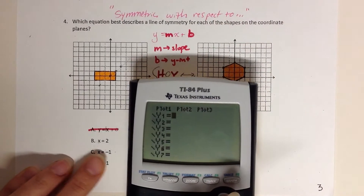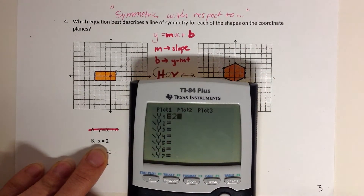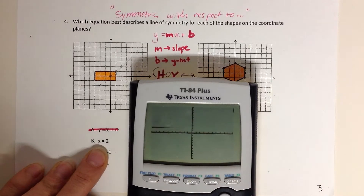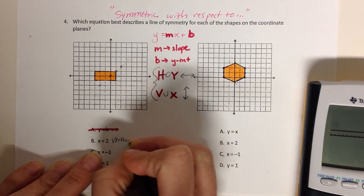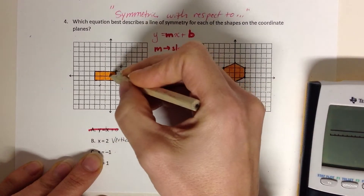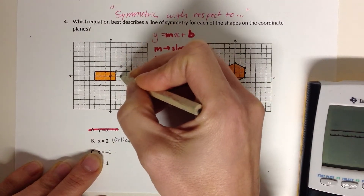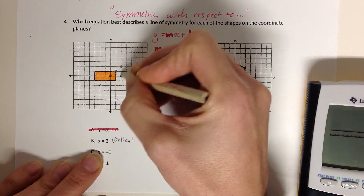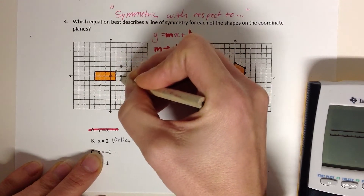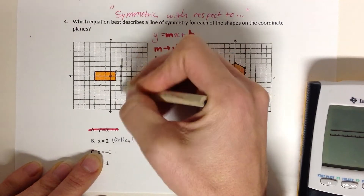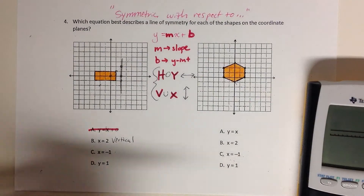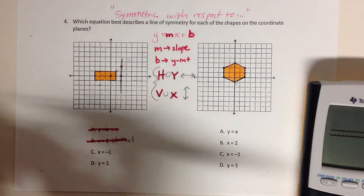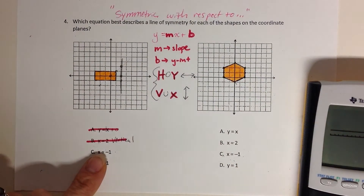I'm going to enter y equals 2 and graph that. What I know right now is that y equals 2 would be a horizontal line, so x equals 2 will be a vertical line. So let's look at the vertical line where x is 2 — for example, here's the point (2,0), here's (2,2), here's (2,-1). Is that a line of symmetry? It is not even cutting through the shape, so I'm going to mark that as a negative.